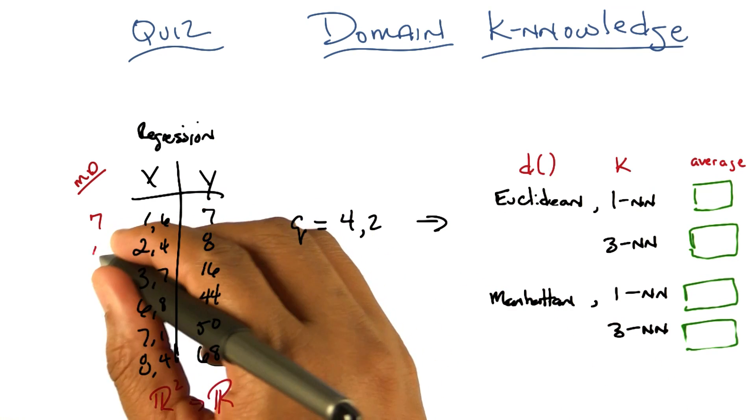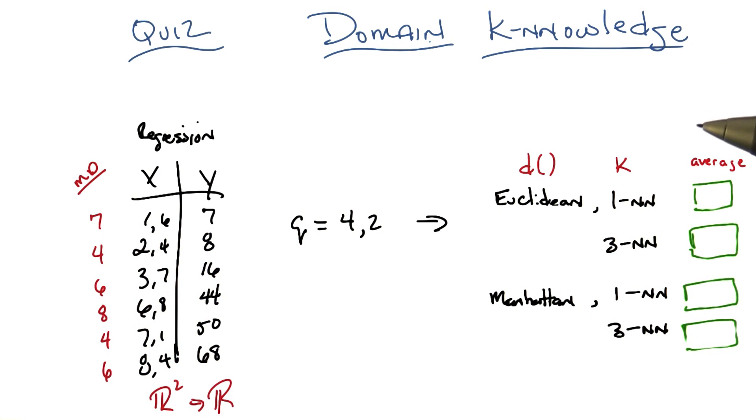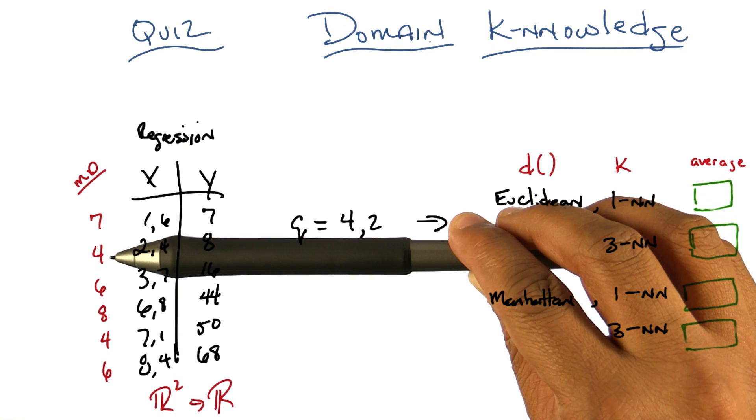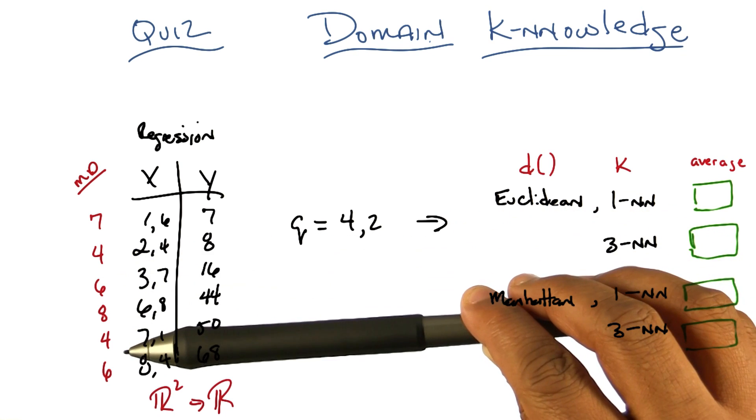4, 6, 8, 4, 6. All right, so now we've got it set up so we can do 1 and 3 nearest neighbor relatively quickly. So, the 1 nearest neighbor, the closest distance, is 4. But unfortunately there are two points that have that, 2,4 and 7,1.